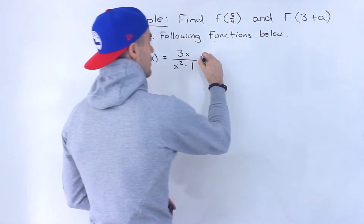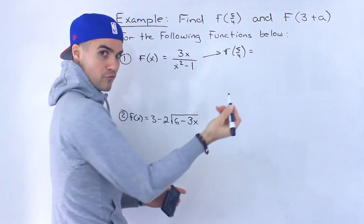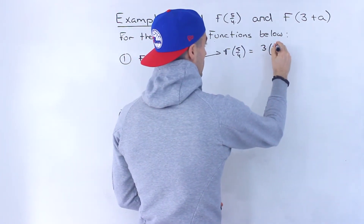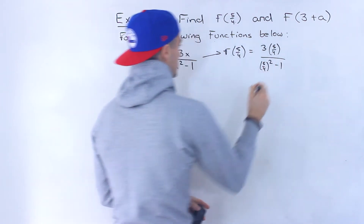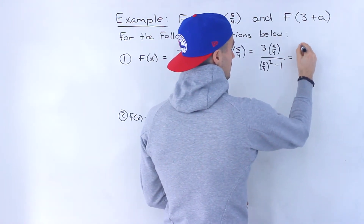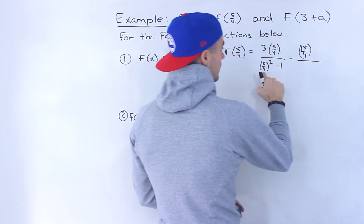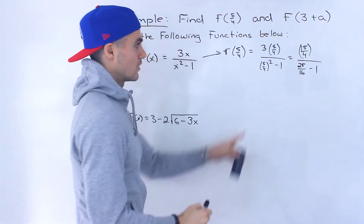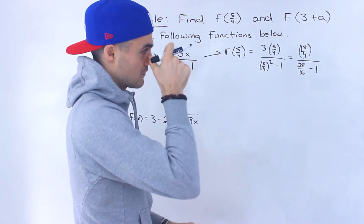Starting with f of 5 over 4, we're going to plug in 5 over 4 for the x value. So we'd have 3 times 5 over 4, all over 5 over 4 to the power of 2 minus 1. The numerator gives us 15 over 4. For the denominator, we take that exponent and distribute it to the numerator and denominator, giving us 25 over 16.